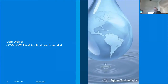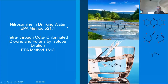Today we're going to spend a little bit of time going through quite a bit of information. We're going to try to cover two distinct applications: EPA Method 521.1 and Tetra-to-Oxyclorinated Dioxins and Furans by Isotope Dilution. So not only are we going to try to cover two methods, we're going to try to cover five instruments in 25 minutes. Please feel free to put questions in the Q&A box, and I will get back to you shortly after the presentation.